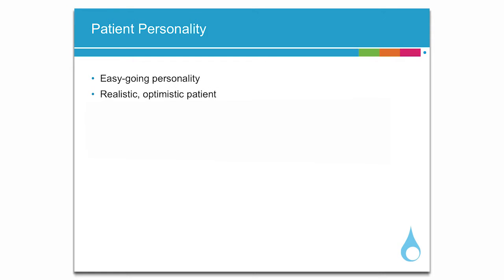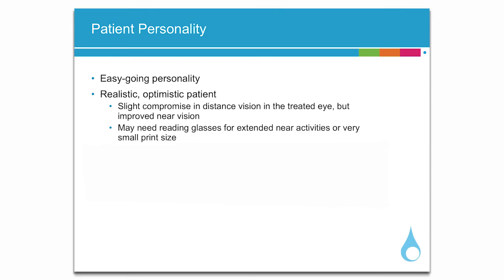When selecting an easygoing personality with realistic expectations, make sure that the patient understands there is a slight compromise in distance vision in the treated eye as a trade-off for improved near vision. Inform them they may need reading glasses for near activities when performed for long time periods or when reading very small print.